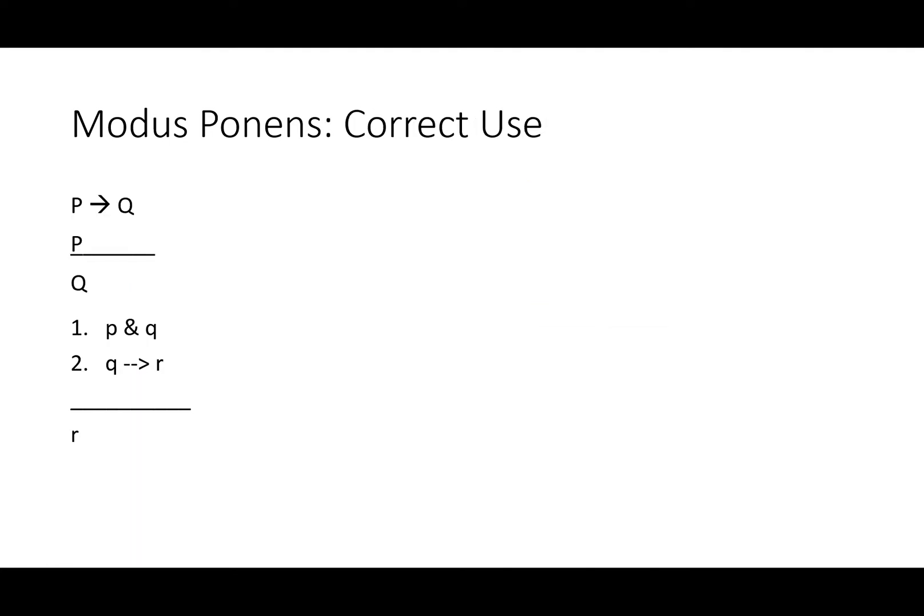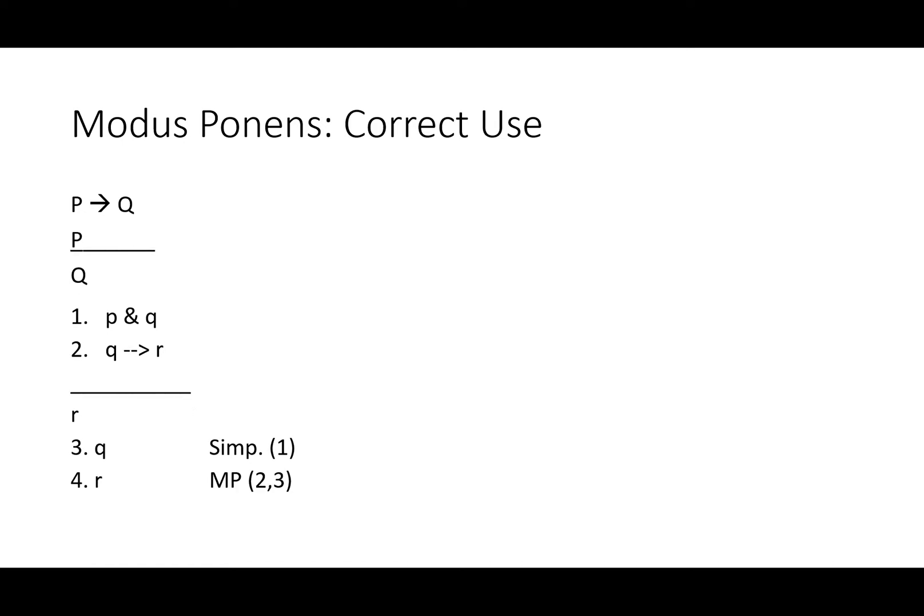Let's see how to correctly use modus ponens in a proof. Here's a simple example: 'P and Q' as the first premise, 'if Q then R' as the second premise, and R as the conclusion. We'll use simplification as our first rule to get Q for line three. We don't need P for anything, so we'll ignore it. Since Q is the antecedent of the conditional in line two, that's all we need for modus ponens — we get R from lines two and three.